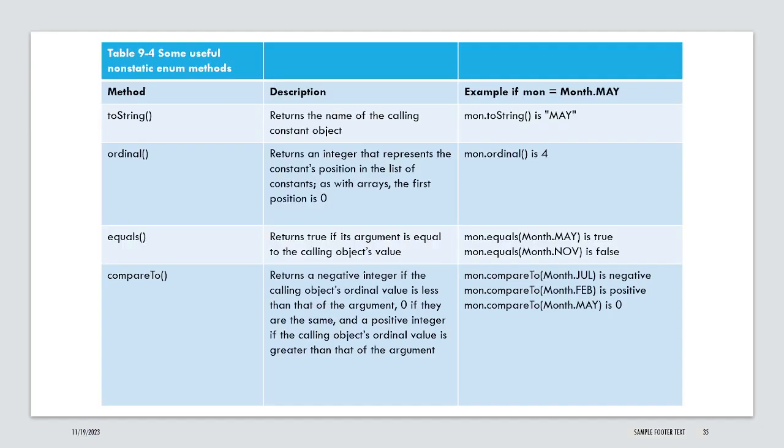You can return the name of the calling object using toString. You can return the constant position within the list of constants. As with list or arrays, the first position is zero.